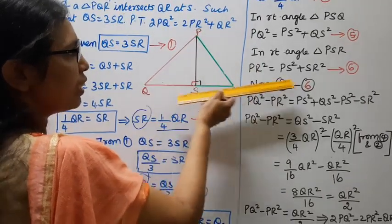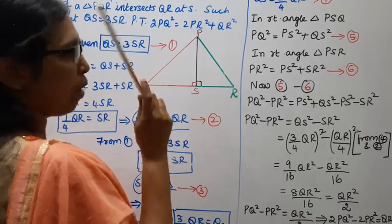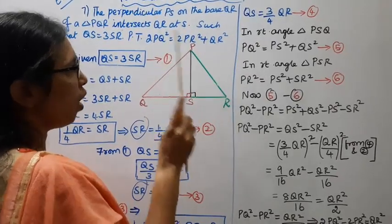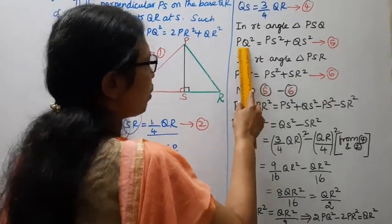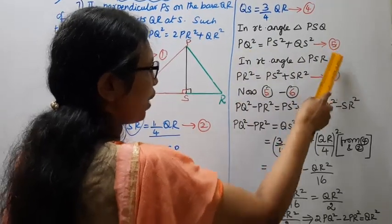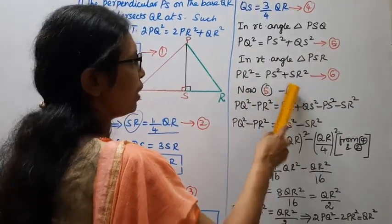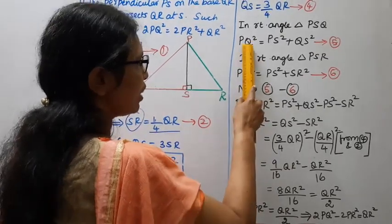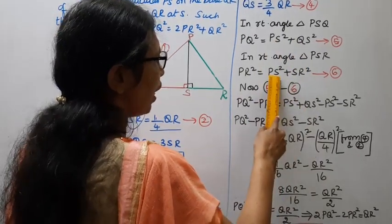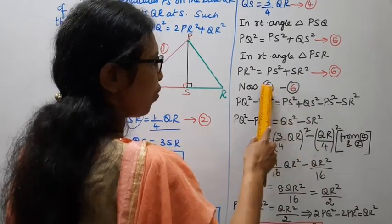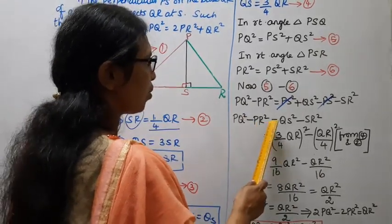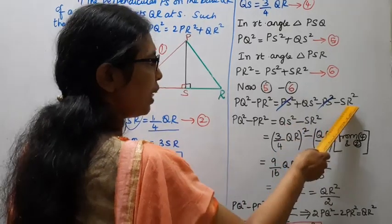Using Pythagoras theorem: PQ square equals PS square plus QS square, and PR square equals PS square plus SR square. We need to prove 2PQ square equal to 2PR square plus QR square. Taking 5 minus 6: PQ square minus PS square equals PS square plus QS square minus PS square minus SR square. So PQ square minus PS square equals QS square minus SR square.